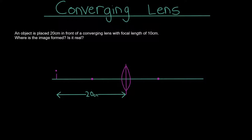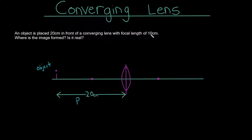For this first practice problem, we are told that an object is placed 20 centimeters in front of a converging lens with a focal length of 10 centimeters. And we are asked where is the image formed, and is it real? So I've drawn this to make it easier to see. We have our object, and it's 20 centimeters in front of this converging lens. This 20 centimeters is the distance from the object to the lens, so that's called P. The focal length of the lens is 10 centimeters.